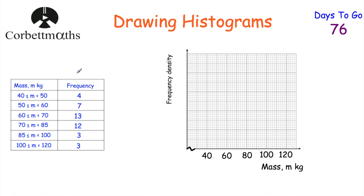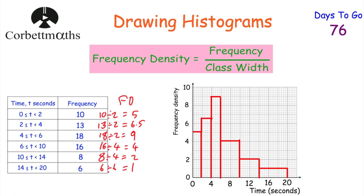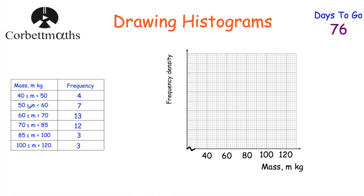Here's one for you to try. We've got a grouped frequency table with mass: 40–50 kg, 50–60, 60–70, 70–85, 85–100, and 100–120 kg, with their frequencies. Some classes have a width of 10 and others have a width of 15 or 20, so it wouldn't be fair to compare frequencies directly. Pause the video and work out the frequency densities — remember, frequency density equals frequency divided by class width.